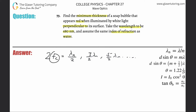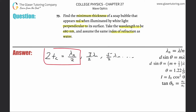We need to find the minimum thickness, so we set 2t equal to the smallest value on the right-hand side. Is 1/2 smaller than 3/2? Yes. Is 3/2 smaller than 5/2? Yes. So the minimum thickness correlates with the first term: 2 multiplied by the thickness equals the wavelength of the light in the soap divided by 2.